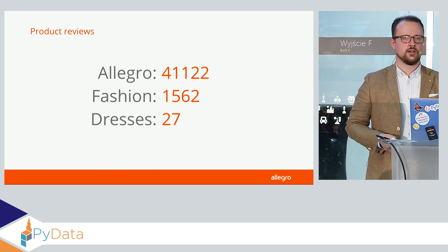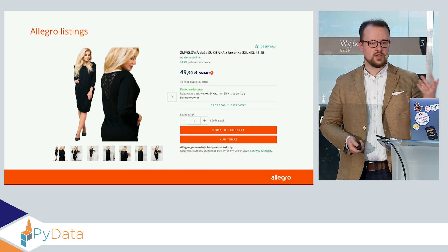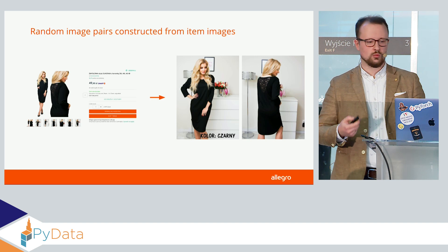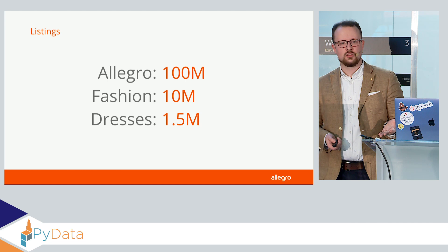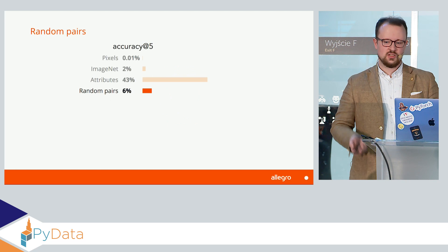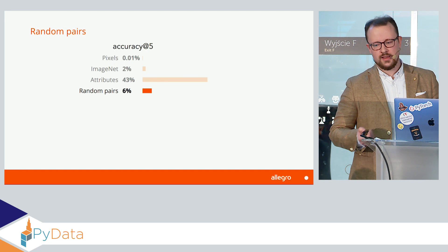So what do we have a lot of on Allegro? We have lots of offers with multiple images. So we could simply pick two images randomly from an offer and provide them as a positive pair, then train the model on those. This way, we have one and a half million pairs just for dresses. But did it work? No — we get 6% accuracy, which is not a really good result.